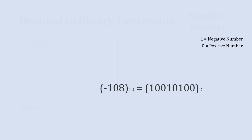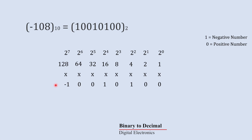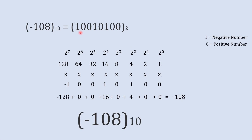We can verify using the same previous method: multiply each binary bit by its decimal place value. The most significant bit is kept as minus, so minus 1 times 128 gives minus 128. 64 times 0 is 0, 32 times 0 is 0, 16 times 0 is 0, and the remaining bits give 4, 0, and 0. When we add these together the answer is minus 108, confirming this binary is exactly equivalent to minus 108.